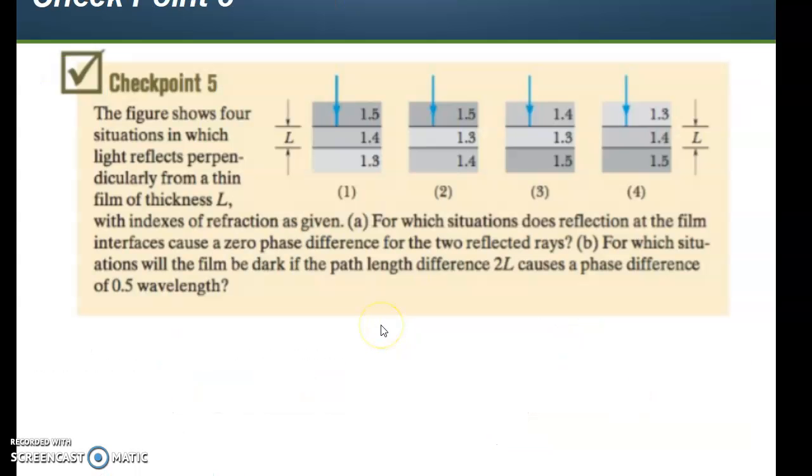So, checkpoint number five. Here what we have are four different situations. Light is reflected perpendicular from a thin film in the middle, and you've got three different indices of refraction. The thickness of that film is L. For which situations does the reflection of the film cause a zero phase difference for the two reflected rays? And for which situations will the film be dark if the path length difference 2L causes a phase difference of 0.5 wavelengths? In other words, you want to apply those prior equations.